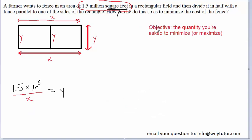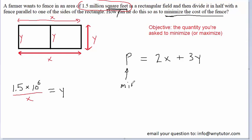Next, we need to come up with what I like to call the objective equation. The objective equation is based on the quantity that you are actually trying to minimize or maximize. In this case, we're trying to minimize the cost of the fence, so we need some kind of equation to represent cost. Since the question doesn't tell us the actual cost per unit, we'll look at this in terms of perimeter — the sum of the lengths of all sides. The perimeter equals x plus x, which is 2x, plus the three sides labeled y, giving us 3y. If we can minimize the perimeter, we minimize the cost of the fence, so our objective becomes to minimize the perimeter.